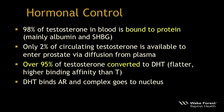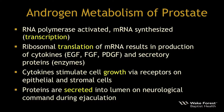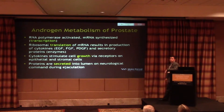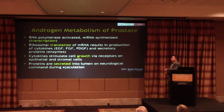The overwhelming majority of testosterone in the blood is bound to protein — mainly albumin and sex hormone binding globulin. Only two percent is available to diffuse into the prostate, and the majority of that is converted to dihydrotestosterone, which has a flatter shape and higher binding affinity for the androgen receptor than testosterone. This then enters the nucleus producing transcription followed by translation, yielding cytokines including several growth factors, secretary proteins, and enzymes — PSA being a serine protease among them.